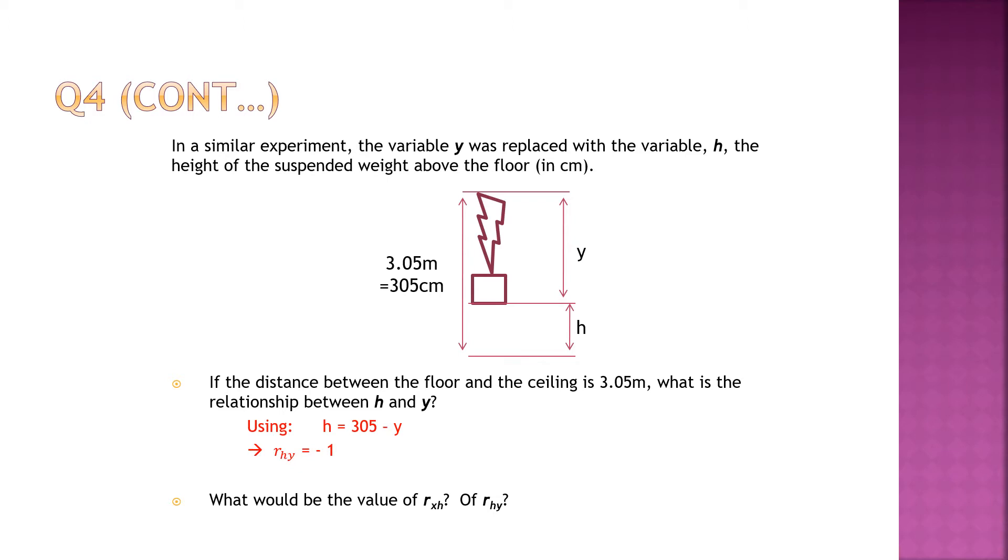So what is the relationship for Rhy? You know it's a perfect relationship. Why perfect? Because there is a formula. H plus y is 3.05. Or in other words, you look at my slide, there's a formula. Whenever there is a formula, it will always be a perfect relationship. But in this case, y is it negative? Because when h become bigger, y will be smaller, right? One will increase, one will decrease. That's why it's negative 1.